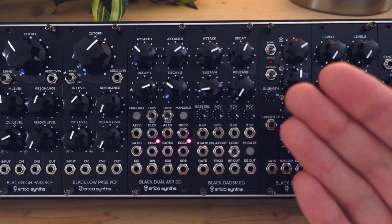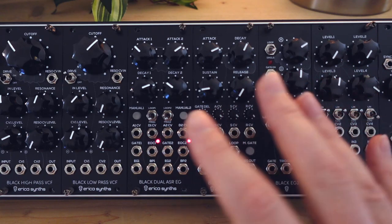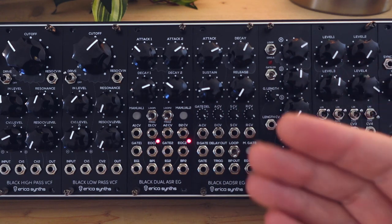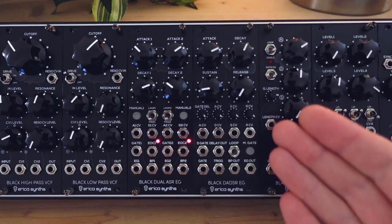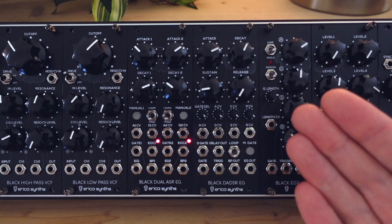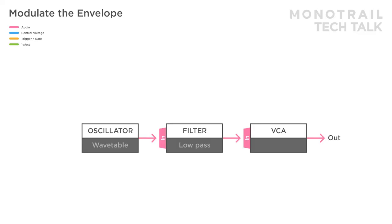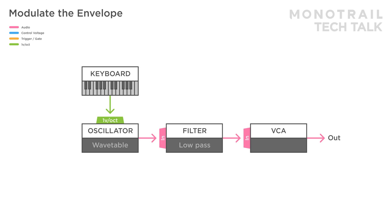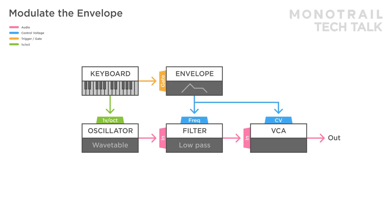Finding CV modulation for all stages of a full ADSR envelope is less common, but this module from Erica Synths has exactly that, so I can show some examples. Here's the basic voice controlled with a keyboard — the gate output is used on a full ADSR envelope, modulating the filter and VCA. The mod wheel output of the keyboard is used to control the sustain, the main part of the envelope, allowing for dynamic playing.